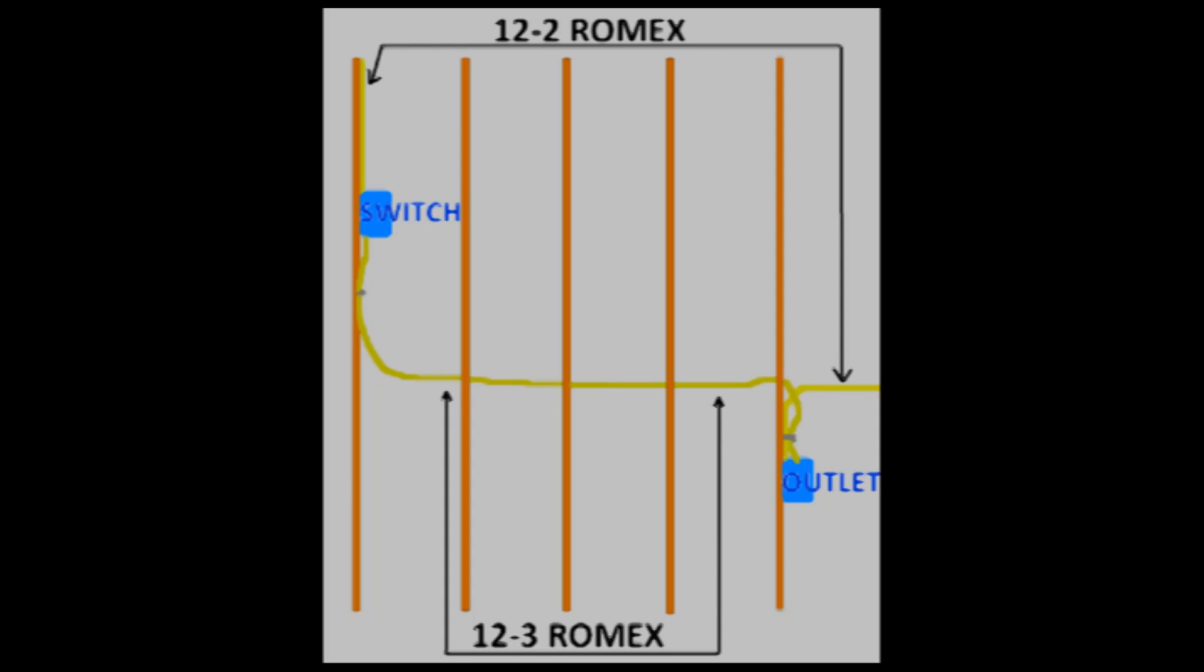This next diagram shows how the complete circuit is run from box to box using 12-3 as the switching wire and 12-2 as a feed in and out for the switch box and outlet box.